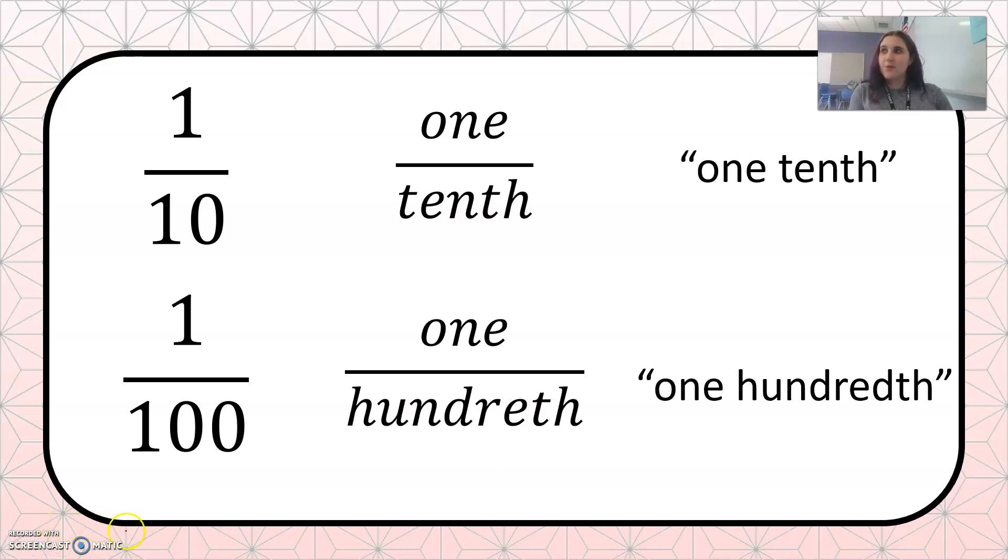So starting out we have the fraction 1 tenth, said as 1 tenth. We have 1 in the numerator and 10 in the denominator. So 1 tenth, 1 over 10. And the second one we have 1 hundredth. 1 is in the numerator and 100 is in the denominator.